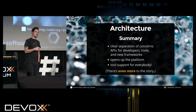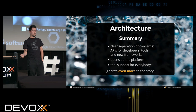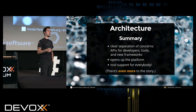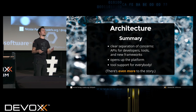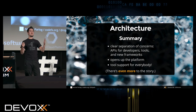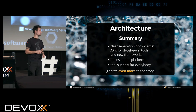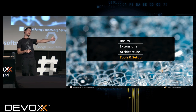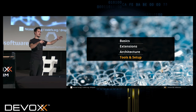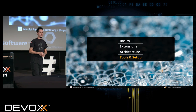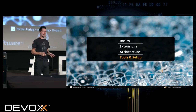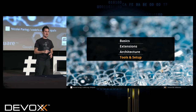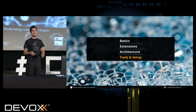Summarizing the architecture: clear separation of concerns, APIs for developers, tools, and new frameworks to implement. The platform opens up and everyone can have tool support. Let's spend the last two minutes looking at where we are right now with tool support — this is a moving target, so it might change quickly.